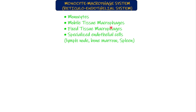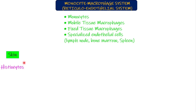Ideally, macrophages should be located at all those points in the body from where germs can enter. Since germs can enter through the skin, macrophages are located inside the skin. The macrophages located inside the skin are known as histiocytes — specialized macrophages in the skin. Whenever there is entry of any foreign invader through the skin, the histiocytes will go and eat them up.